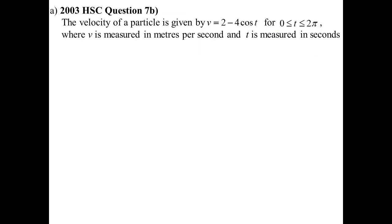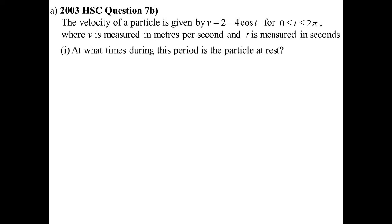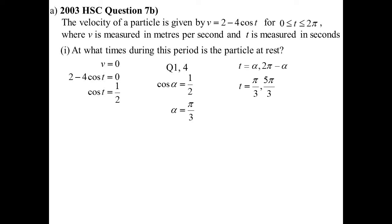The velocity of a particle is given by v = 2 minus 4 cos t, measured in metres per second with t in seconds. At what times is the particle at rest? That means velocity equals zero, so we solve the trig equation. We're only going between 0 and 2π, so we're in the first and fourth quadrant, giving us t = π/3 and t = 5π/3.